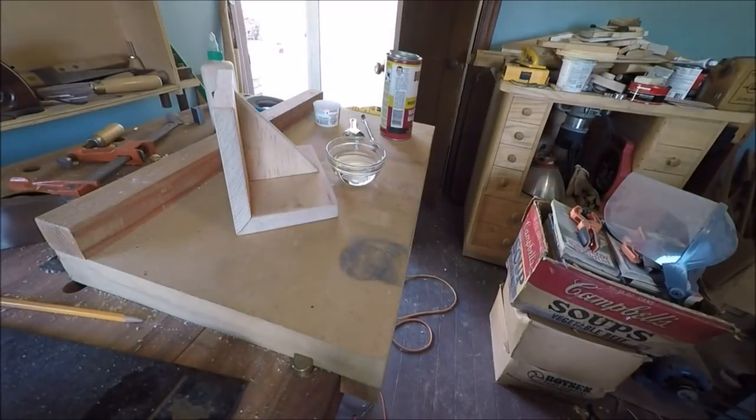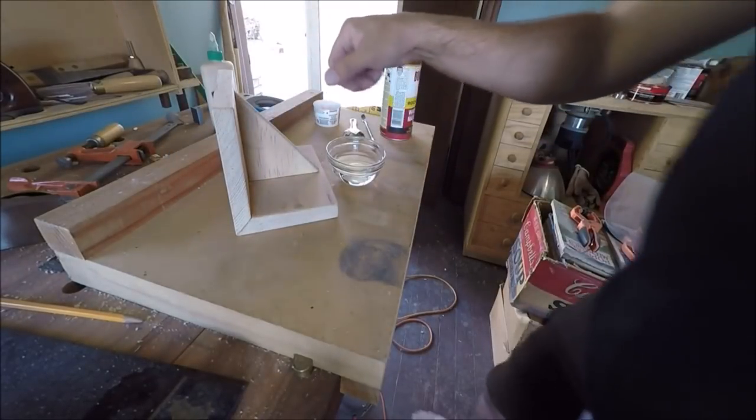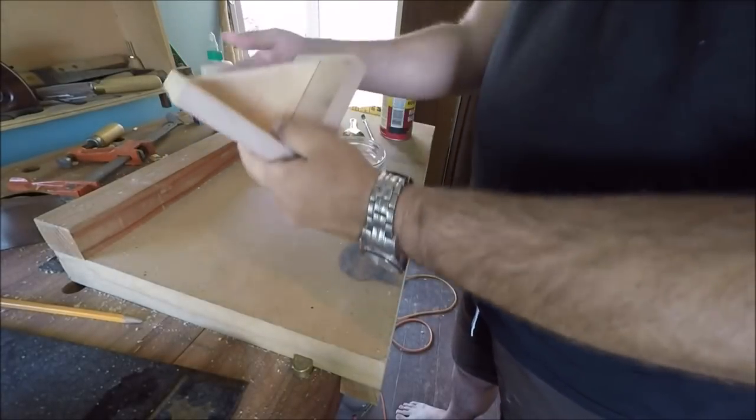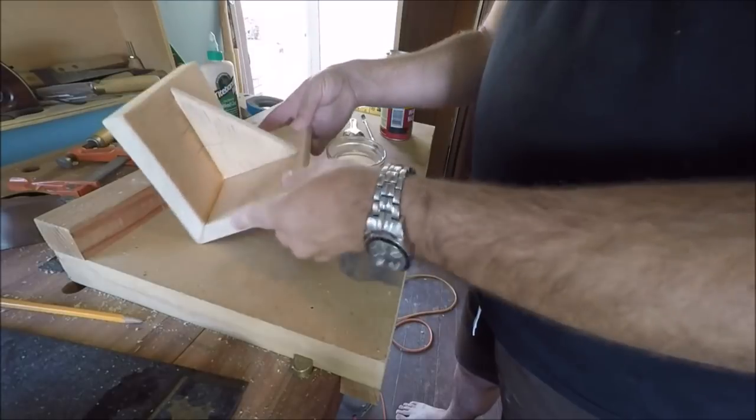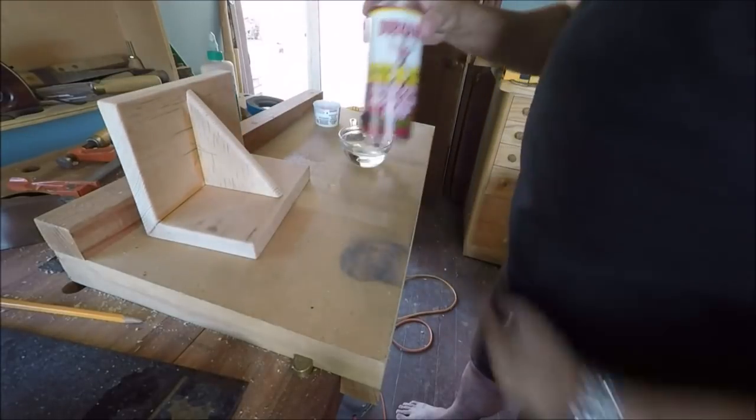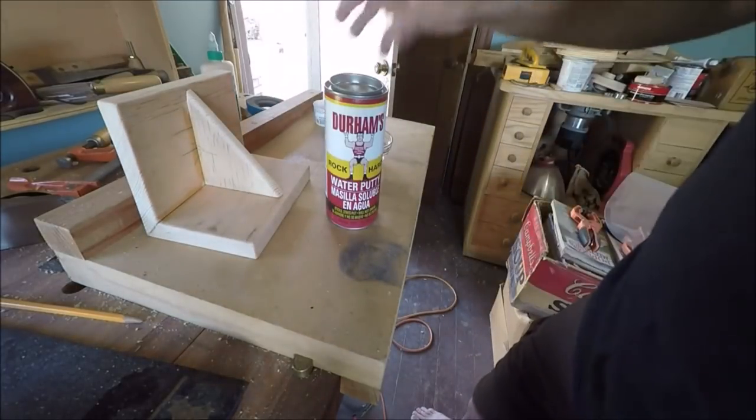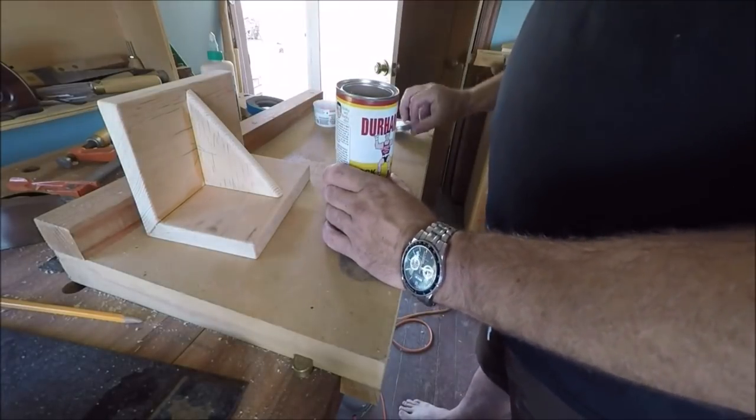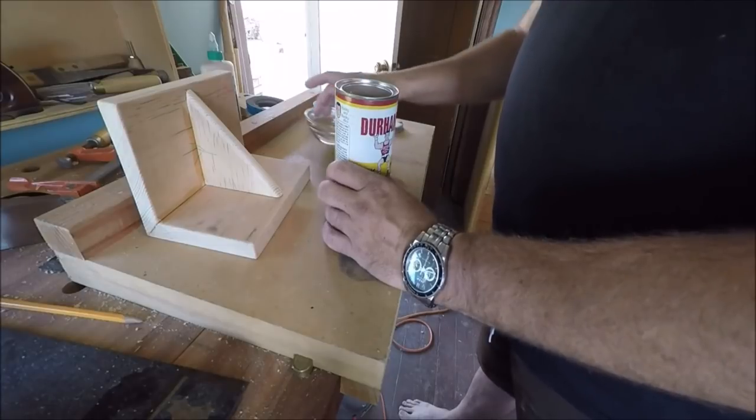All right, so next step is to put the fillets in. So in these corners here, a fillet is just a radius on the inside of the corner. So what we're going to use is Dram's rock hard water putty, and I've had this can for a little while but I really haven't used it much, so we're going to give it a whirl.